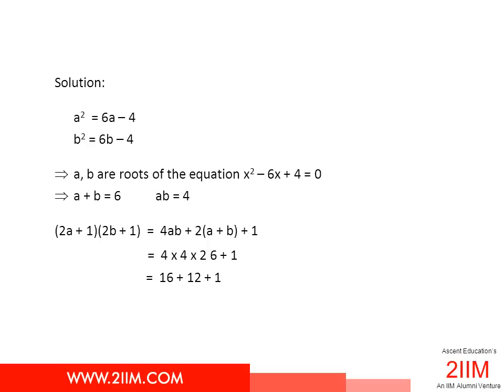The critical step in this question is spotting that a and b are roots of the equation x² - 6x + 4 = 0. If the question were stated as 'a and b are roots of the equation x² - 6x + 4 = 0, find (2a + 1)(2b + 1)' it would be very straightforward, but this makes it far trickier.